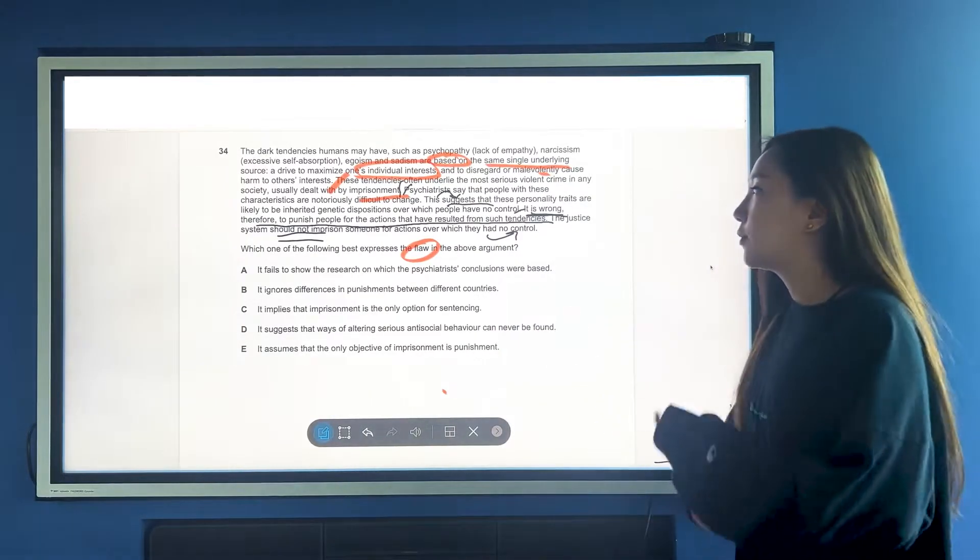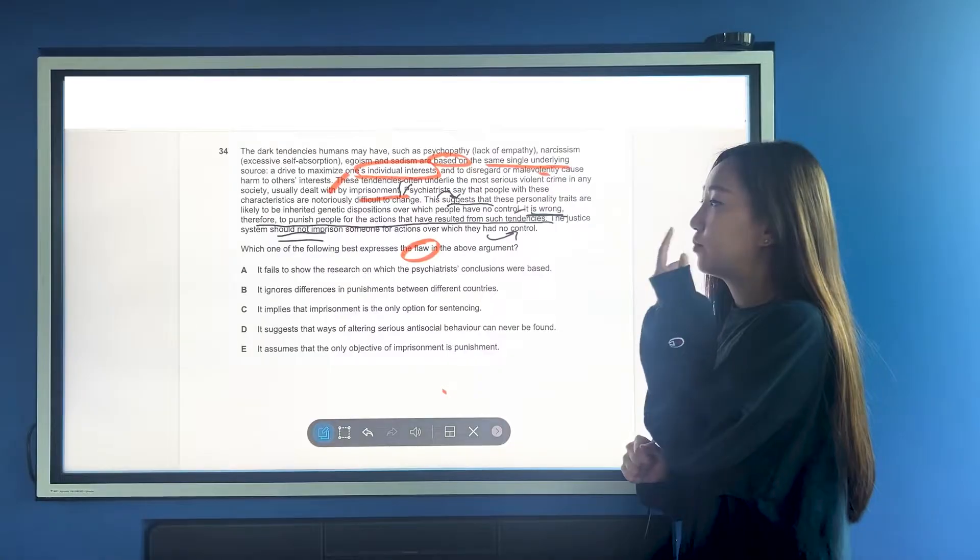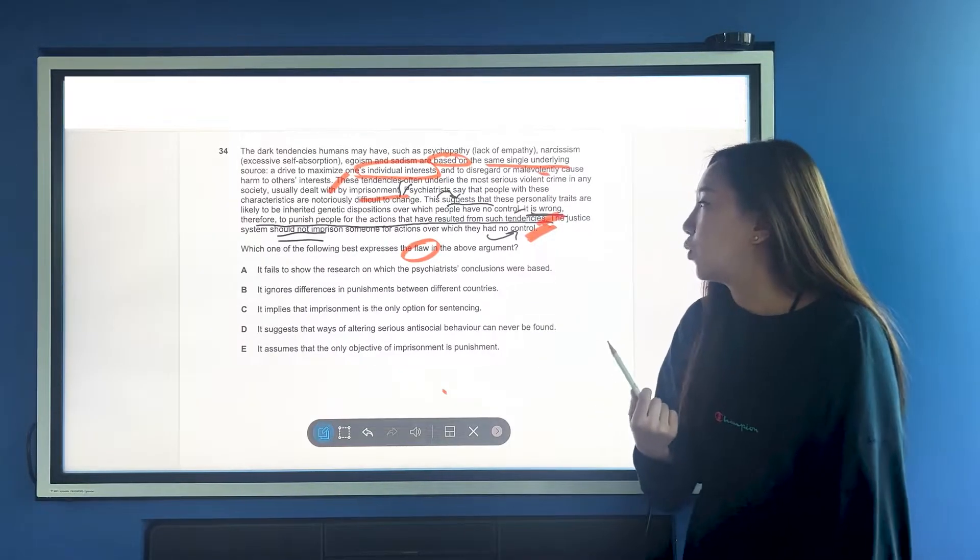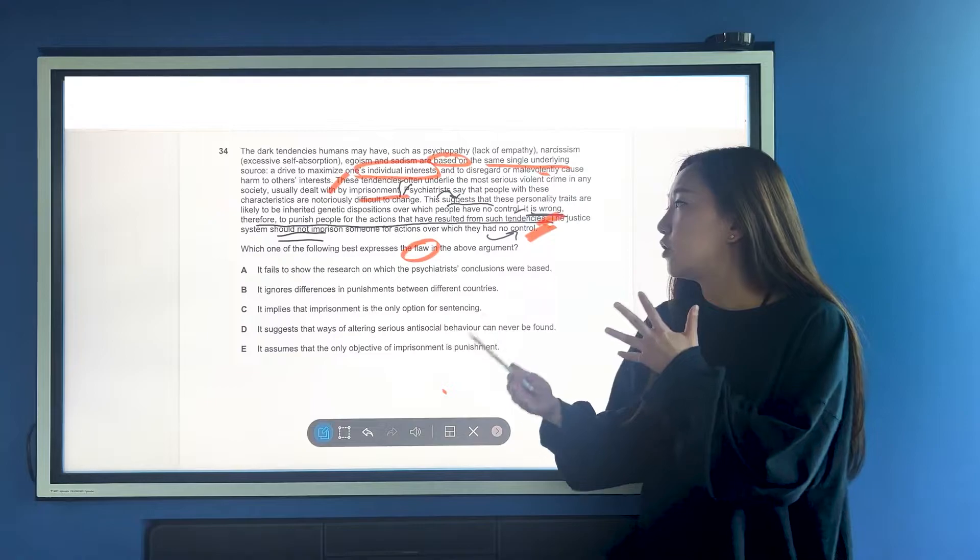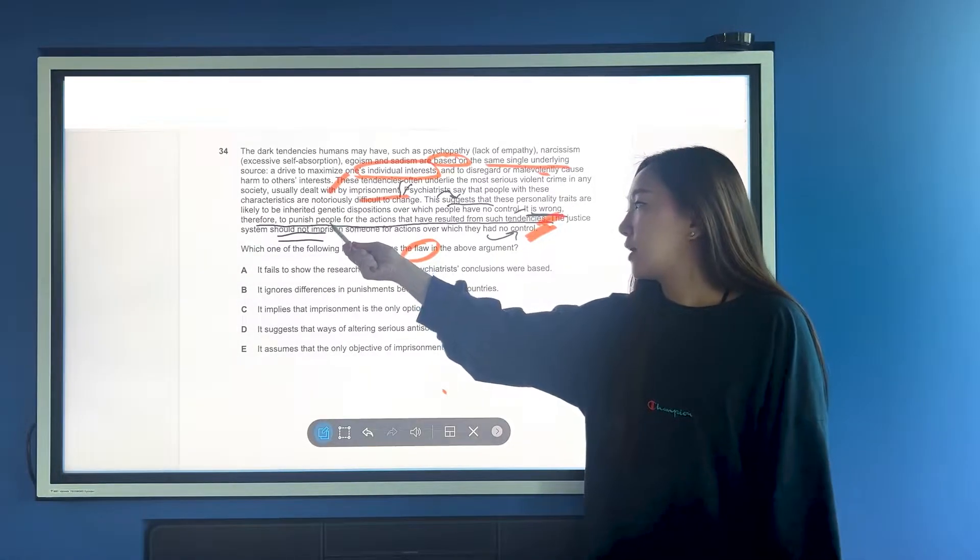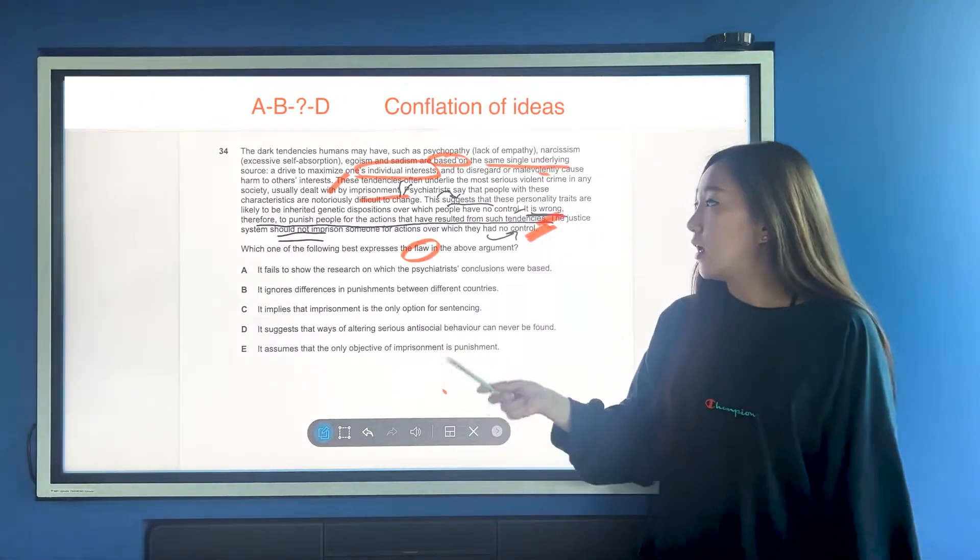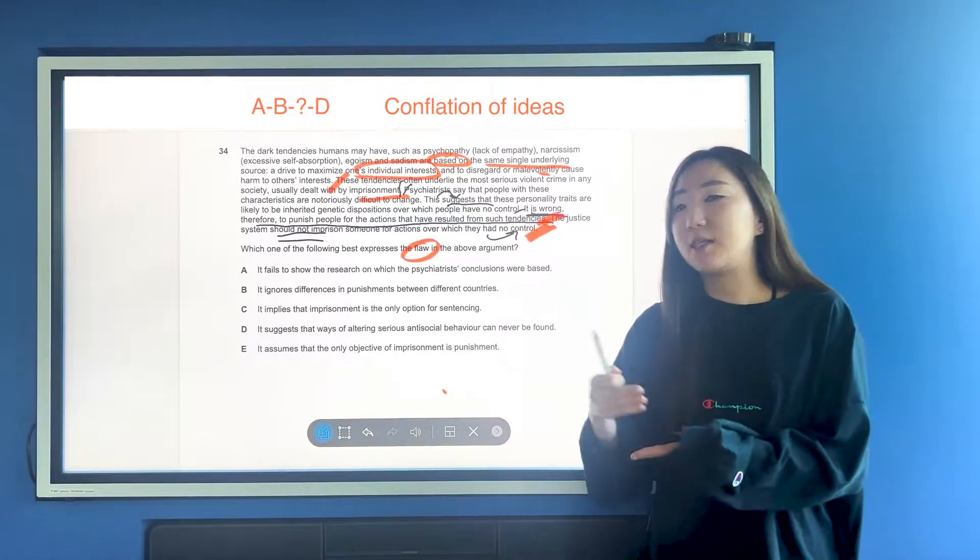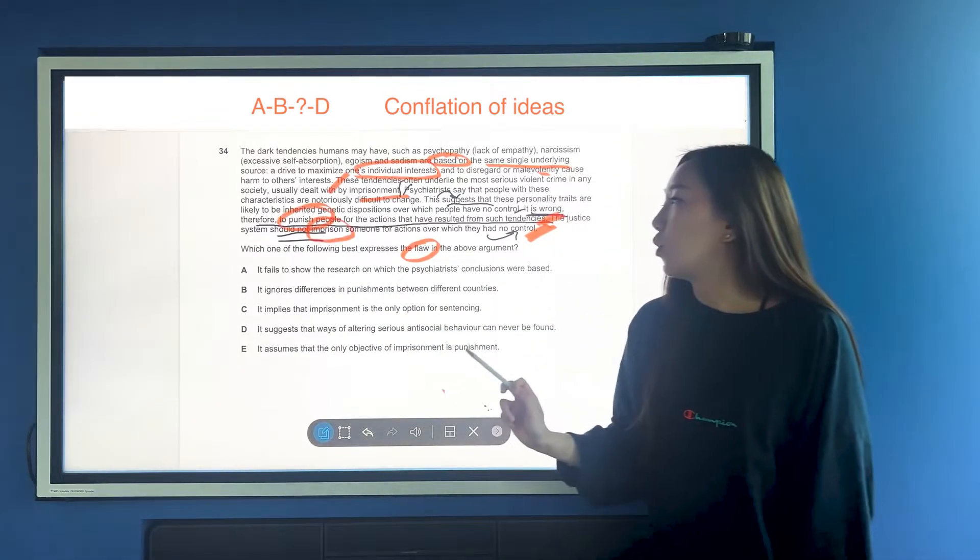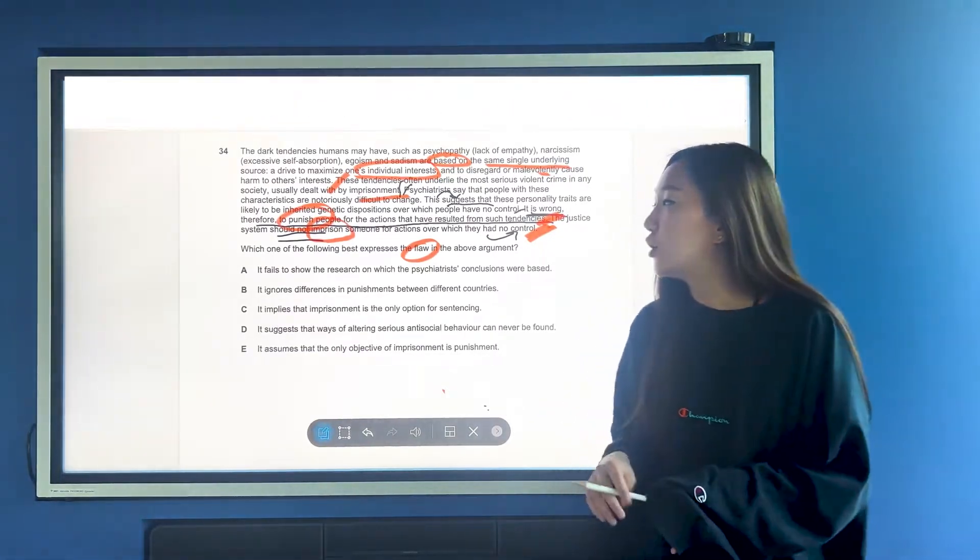The justice system should not imprison someone for actions over which they have no control. We're basically saying the argument is being that psychopathy and everything is genetic, people don't have a control over it, therefore, we shouldn't punish people for that, and therefore, the main conclusion being, the justice system should not imprison someone. You can see that there's a clear - you can look at this in two ways. Number one, you can look at it as the point I made where it doesn't quite match. The punishing people has to, after this sentence, there has to be another sentence that says all prison sentences punish people, or something like that. So, you can look at it as having jumped from A, B to D, or you can look at it as having something where imprisoning someone is not the same as punishing someone.